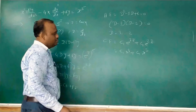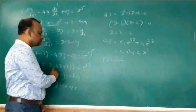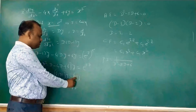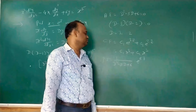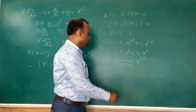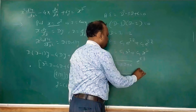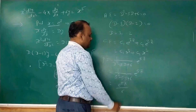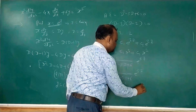For the particular integral: PI = 1/(D² − 5D + 6)·e^(5z). Using the shortcut method, replace D by 5: PI = e^(5z)/(25 − 25 + 6) = e^(5z)/6. Since e^(5z) = x⁵, we get PI = x⁵/6.